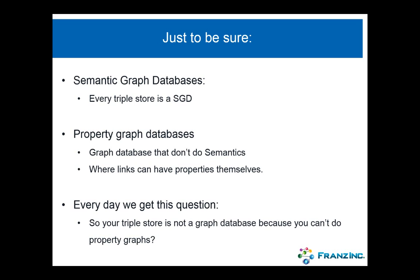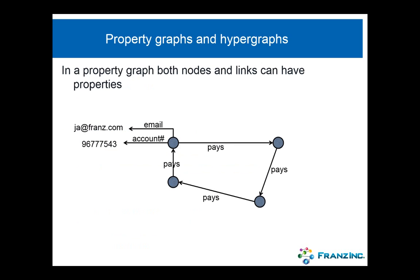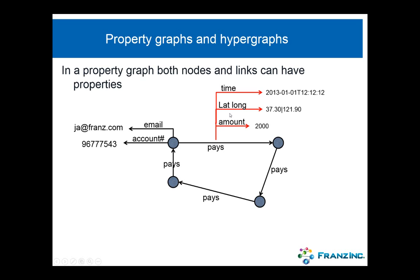We get this question all the time. I talk to people from Google and Oracle, and yes, they get that question all the time. So I thought maybe I should do a webinar to talk about this issue. In a property graph, both the nodes and the links can have properties. For example, if you have payment events between various accounts, the pay relationship could have additional metadata like an amount, a latitude and longitude, and the time when a particular payment was made.